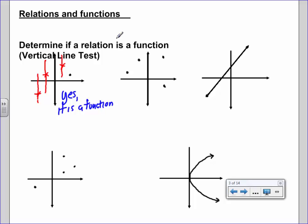We come over to the second one and we can draw a vertical line here, it's going to hit twice. So right there we don't have to draw any more, this fails the test, so we say no, it is not a function.